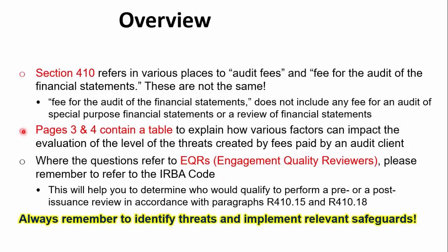Those two tables on pages 3 and 4 are very, very useful. Where questions refer to EQR, also remember to refer to our URBA code — the quality management standards are already in effect from 15 December 2022. In the old days we had EQCRs — engagement quality control reviewers. Now engagement quality reviewers must be a member of URBA. This helps determine who qualifies to perform a pre-issuance review — definitely URBA-registered, as that is the traditional hot review before you issue your audit report. A post-issuance review aligns with a monitoring review.